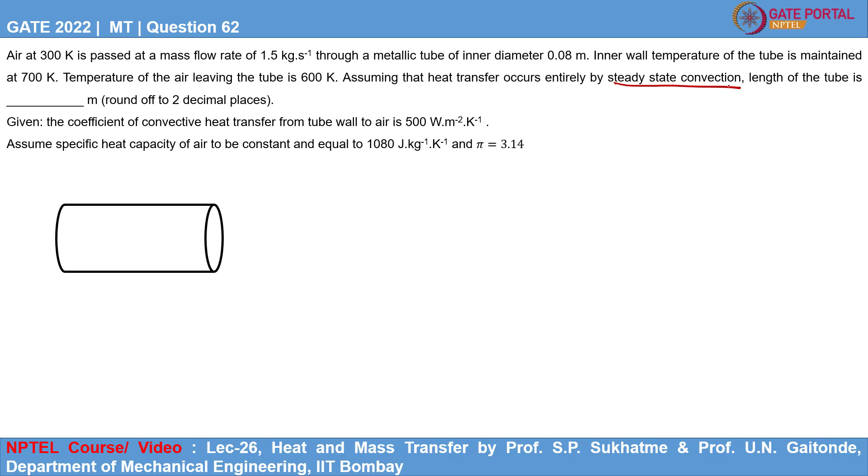Now what is given in the question is that air is flowing inside this tube at a temperature of 300 Kelvin. That is the inlet temperature of air. The wall of this tube is maintained at 700 Kelvin. The air leaves the tube at 600 Kelvin. This is T inlet. This is T outlet.